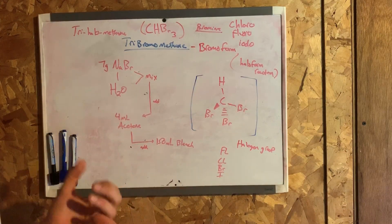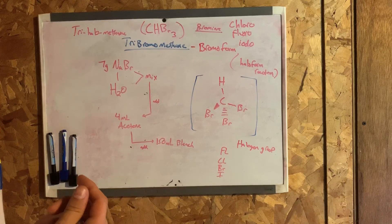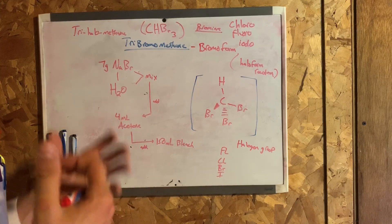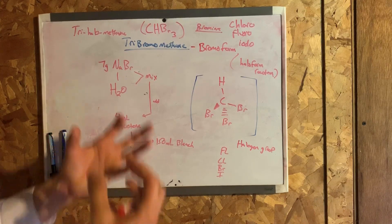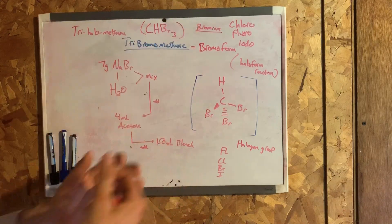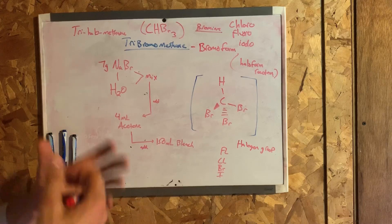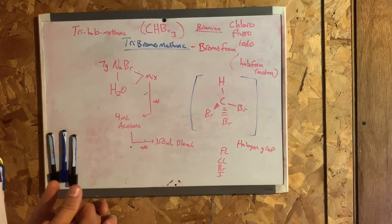So bromoform is a brominated organic solvent, colorless liquid at room temperature, with a high refractive index. Very high density, meaning that's a heavy liquid and it sinks to the bottom. It also has a sweet odor, which is similar to that of chloroform.